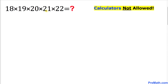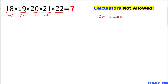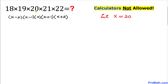Here's the very first thing we can do — let's go ahead and manipulate these numbers. If I call this middle number 20 as x, so that means x equals 20, then 19 is going to become x minus 1, 18 is going to become x minus 2, 21 is going to become x plus 1, and 22 is going to become x plus 2.